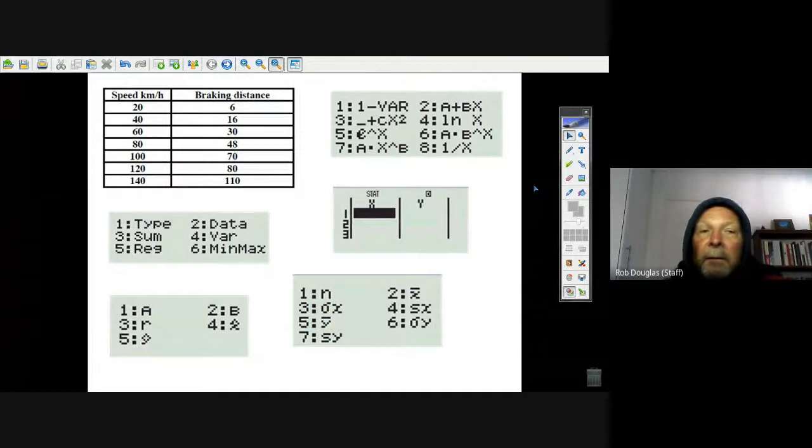Okay, we're going to look at this exercise on regression lines. We're given a table with speeds from 20 to 140 and braking distances that go with them. The braking distances depend on the speed your car is going, so these are the x values and these are the y values.